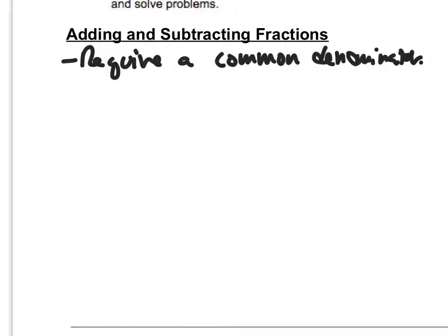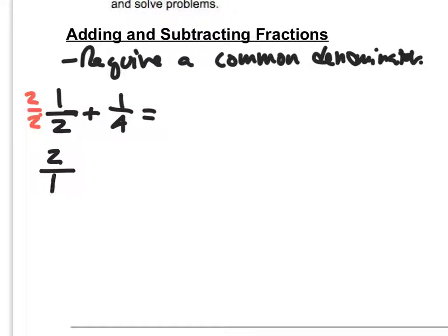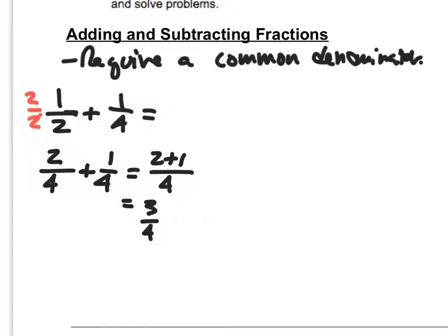Let's take one half plus one fourth. We have a two and a four — these are not common denominators. How could I turn two into a four using multiplication? I multiply the top and bottom by two, because two times two gives me four. So we get an equivalent form: two over four plus one fourth, which equals three fourths.